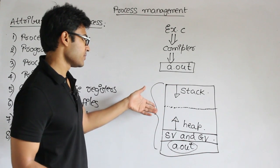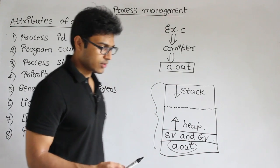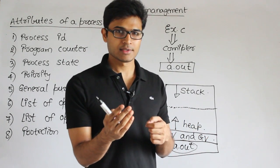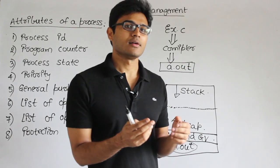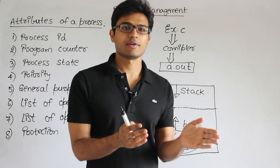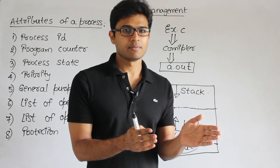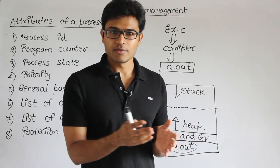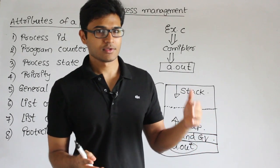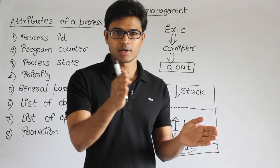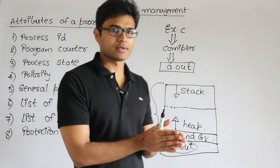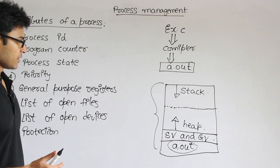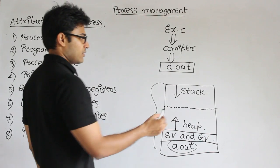Whichever takes more space will occupy more, and whichever needs less will shrink. It's like a book where from one side you write the table of contents and from the other side you write the compiler design — you write from opposite sides because you don't know which one is going to take more space. Similarly, since we don't know which of heap or stack will be larger, this is the kind of implementation we use.